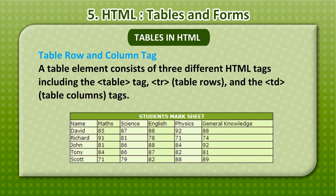A table element consists of three different HTML tags: the table tag, tr (table rows), and the td (table columns) tag.